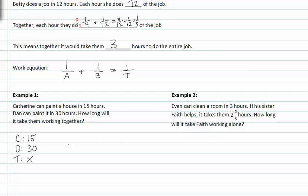Let's go ahead and set up our equation for work. We have Catherine at fifteen hours to do the job plus Dan at thirty hours. And that's going to equal the total, which we don't know yet. Notice that this equation is very similar to the problems we were working earlier where we had to find an LCD. Our LCD is going to be thirty x.